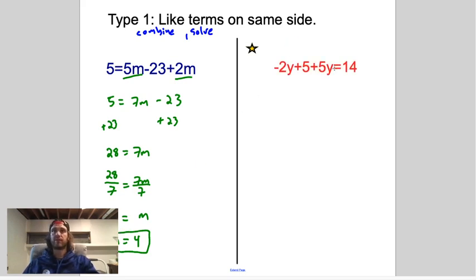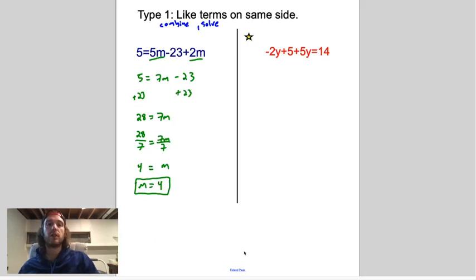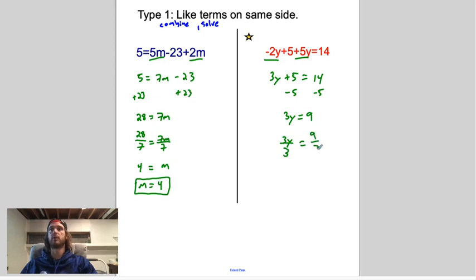You guys go ahead, give this one a try on your own and check in just a minute. Let me extend the page so you can see what we got going on. I'm gonna work it through, so pause it if you want to try it by yourself. Adding these two together, negative 2 plus 5 is 3y plus 5 equals 14. Want to get y by itself, gonna get rid of this constant first. 3y equals 9. Divide both sides by 3 to undo multiplication by 3. Which will give us y equals 3.